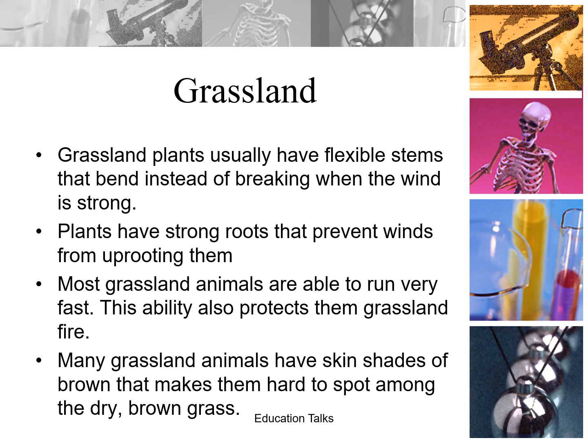Most grassland animals are able to run very fast. This ability protects them from grassland fires and from their predators. Many grassland animals also have skin shades of brown that make them hard to spot among the dry brown ground. This technique is known as camouflaging, which helps them stay hidden from their predators.